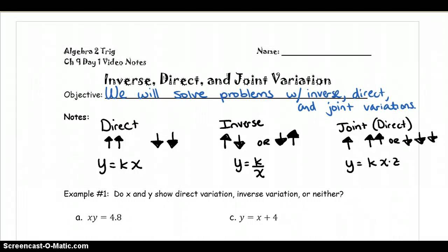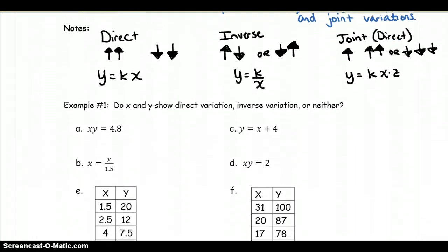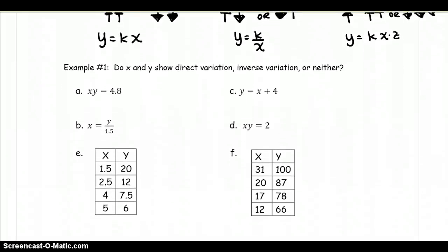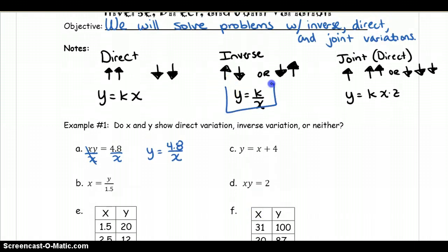In example number one, and you'll get to do this on your homework as well, we want to look at data, and we want to say, this is a direct, inverse, or a neither relationship. The first thing I like to do is figure out what kind of relationship this is. So I like to solve for y equals. I'm going to divide by x on both sides, and we end up getting y equals 4.8 over x. Since this is the same thing as an inverse, where k happens to be 4.8, we can say that the relationship here is inverse. As one thing is going up, it seems like the x value will have to go down, or vice versa.